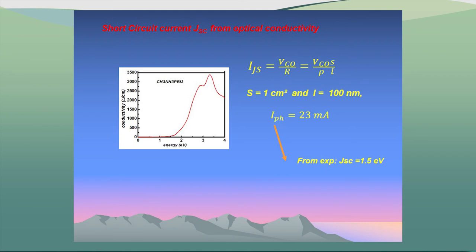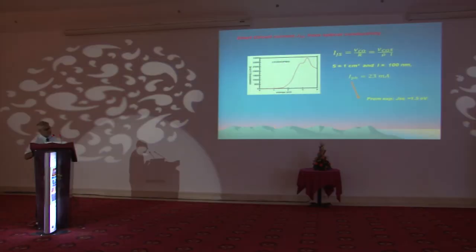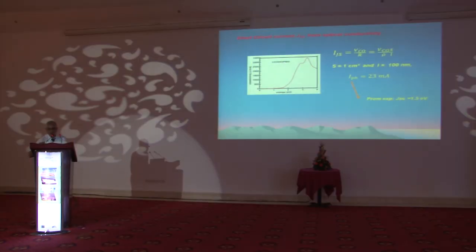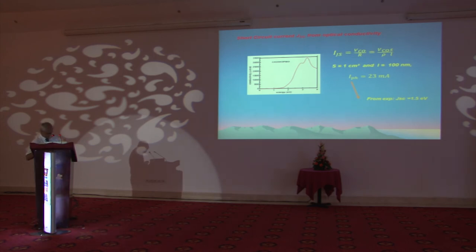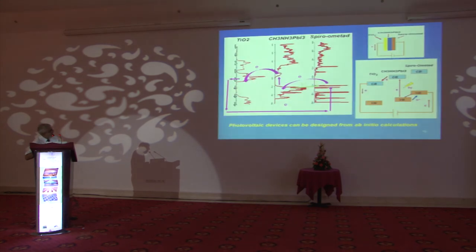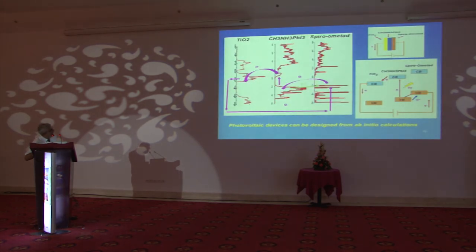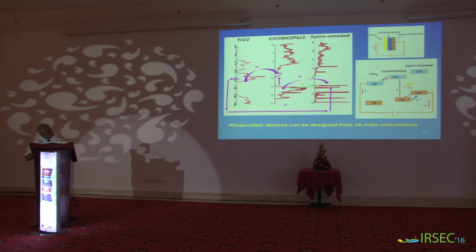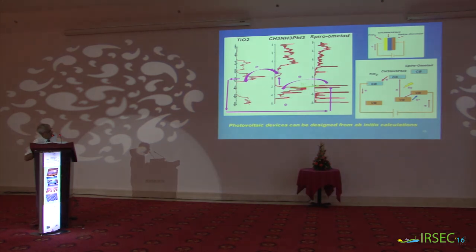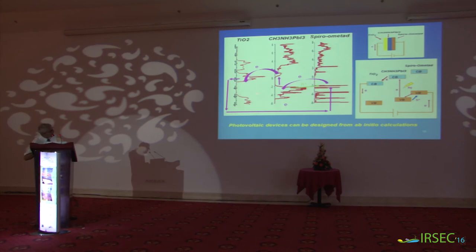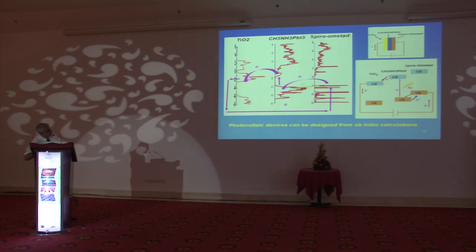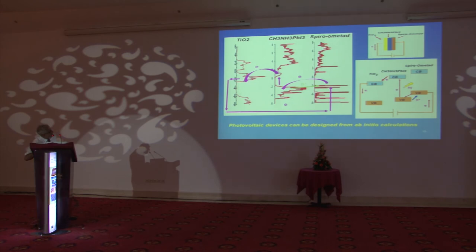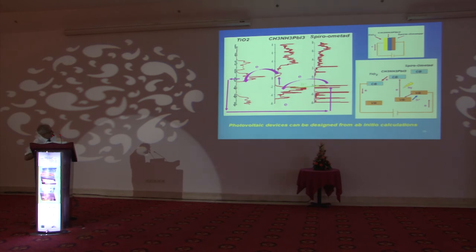This is very important. Another important thing is that from the band structure configuration, we can get a precise energy band diagram. This is our device: this is titanium oxide, this is Spiro-OMeTAD, and this is the perovskite. This is the current diagram as presented by experimentalists, and our calculation explains perfectly the phenomenon of charge flow which takes place in photovoltaic devices.